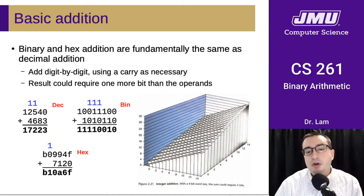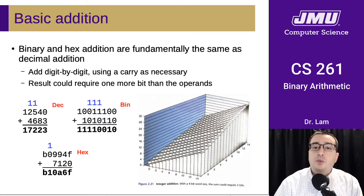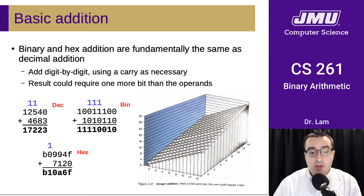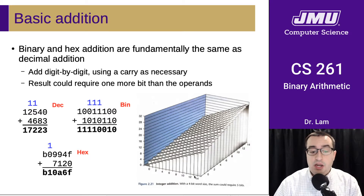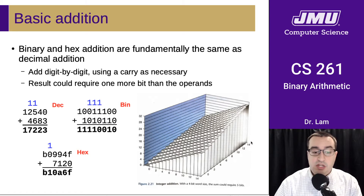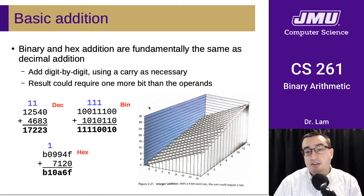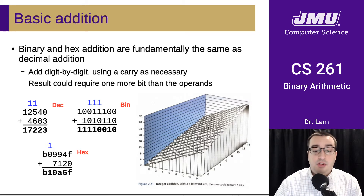One thing that is important to note here is that the result of the addition might require one more bit than the operands. This is what the textbook is trying to illustrate with these diagrams. On one axis, we have the first operand from 0 up to 15, and on the other axis we have the second operand, also 0 up to 15. But the result axis — the Z axis or vertical axis — has a maximum value of 32, since 15 plus 15 is 30.